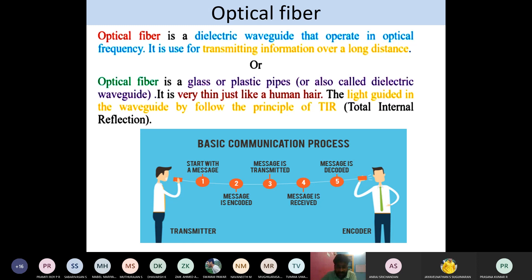Signal transmission and reception takes place with the help of the waveguide, which is nothing but optical fiber. Whatever information you want to communicate, you pass it through the waveguide. The purpose of the waveguide is to carry the information in the form of an optical signal.